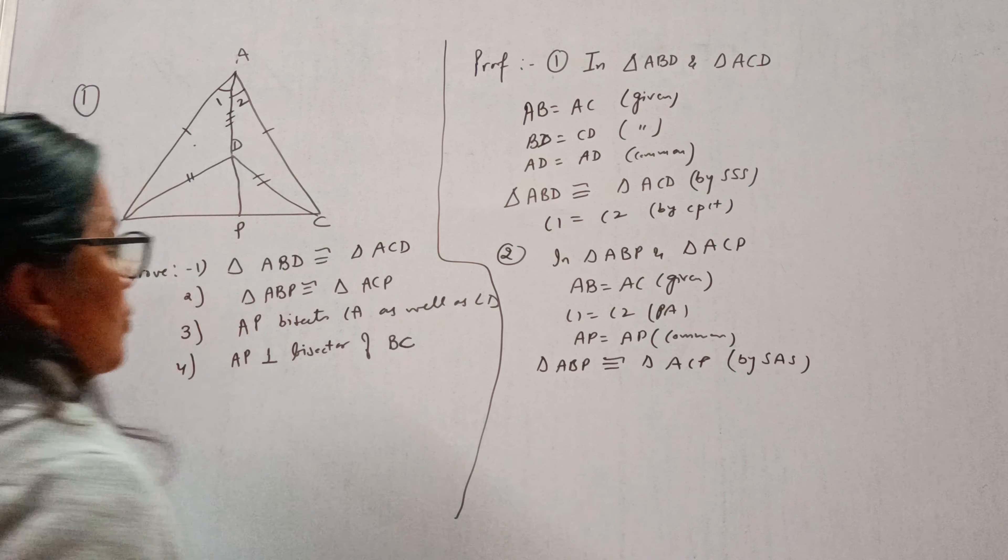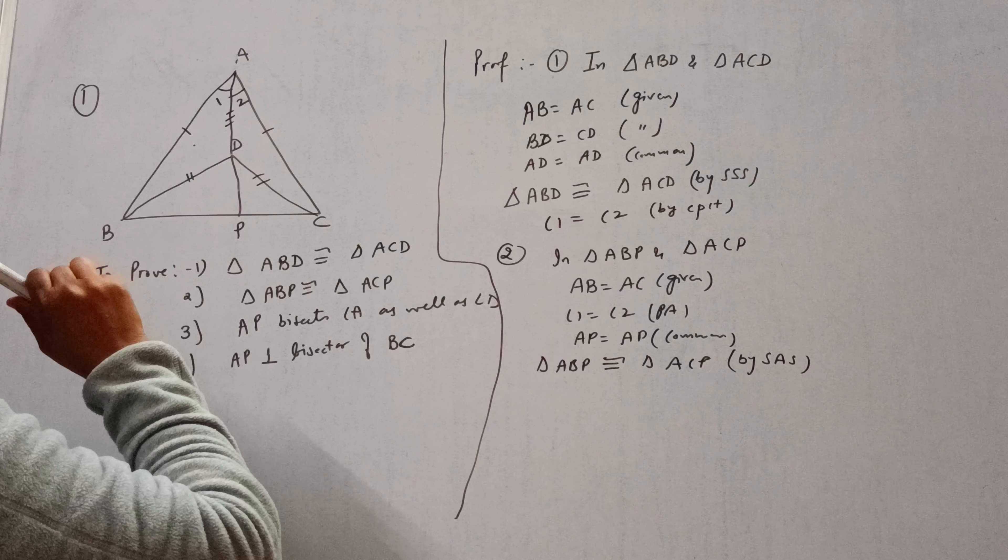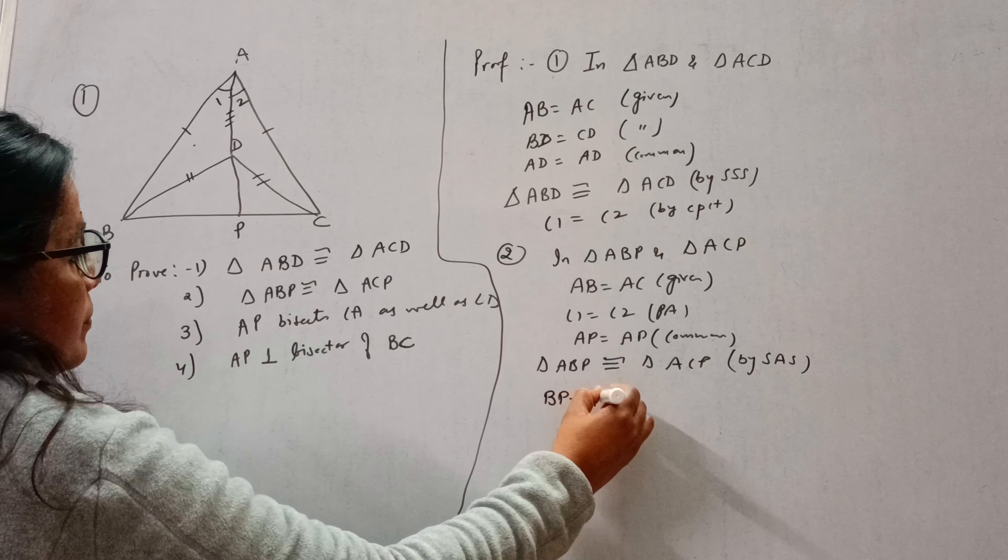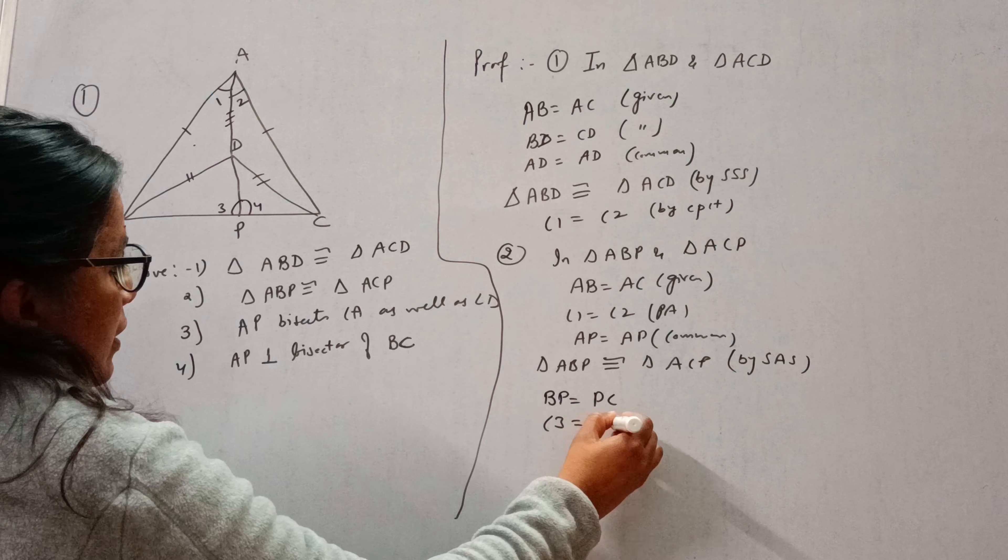So we can say triangle ABP congruent to triangle ACP by SAS. And if these two triangles are congruent, then we can write BP is equal to PC and angle 3 equal to angle 4 by CPCT.